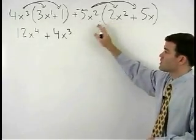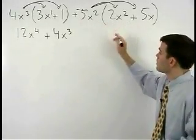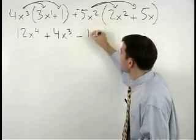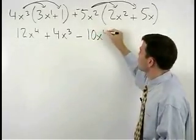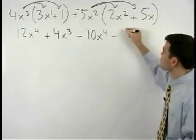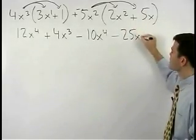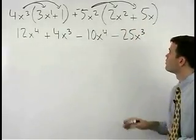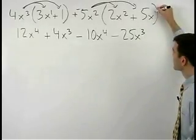Multiplying the coefficients and adding the exponents, we have -10x⁴ - 25x³. Remember, x can be thought of as x to the first.